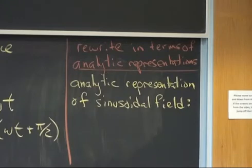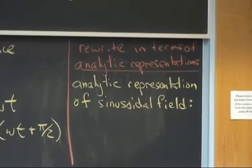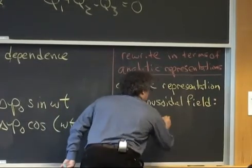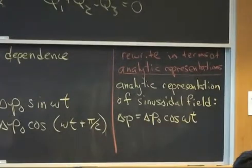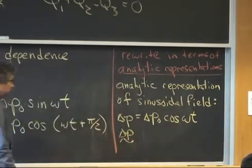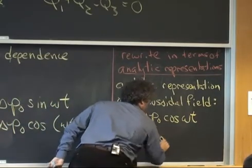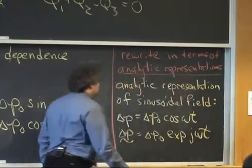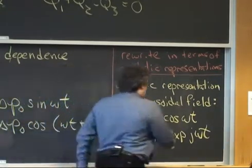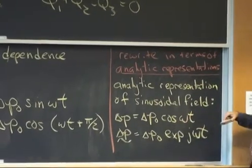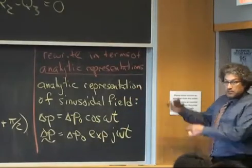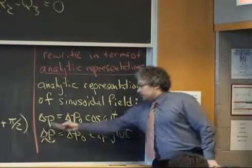I'm going to write the analytic representation of a sinusoidal field — this can apply for pressures, currents, electric fields, etc. If delta p is given by delta p0 cosine omega t, I write the analytic representation — denoted with a little squiggle — as a complex exponential. By Euler's formula, e to the j omega t equals cosine omega t plus j sine omega t. This means the real physical pressure difference is given by the real part of this analytic representation.